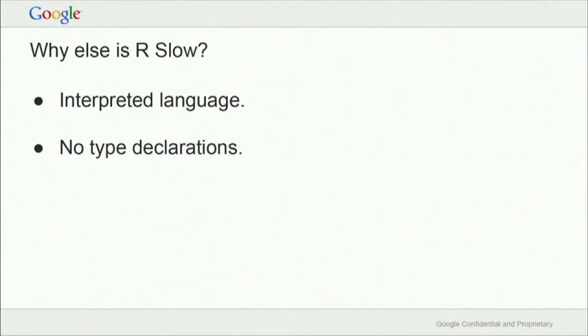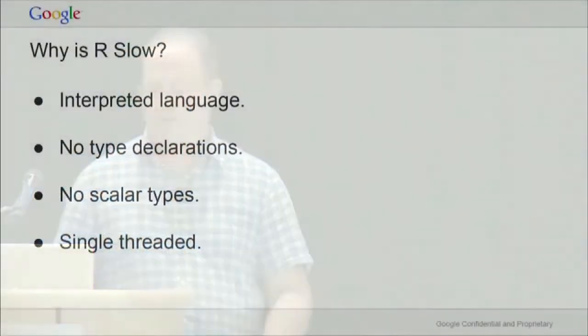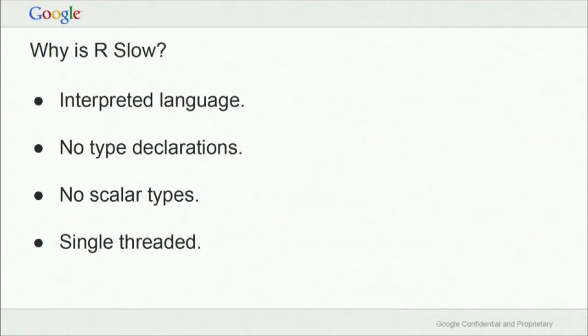Some of the things people more commonly talk about that cause R to be slow: it's an interpreted language with no type declarations. Type declarations matter because for a simple statement like A = B + C, if you don't know the types of B and C, you have no idea what kind of addition to use. R has many different kinds of addition — integers to integers, integers to doubles, scalars to scalars, scalars to lists, lists to lists of the same or different size. Additionally, there are no scalar types and things are single-threaded.